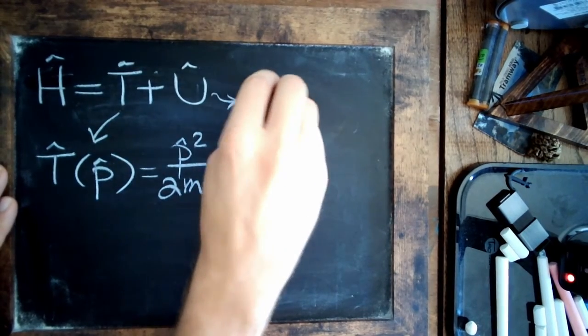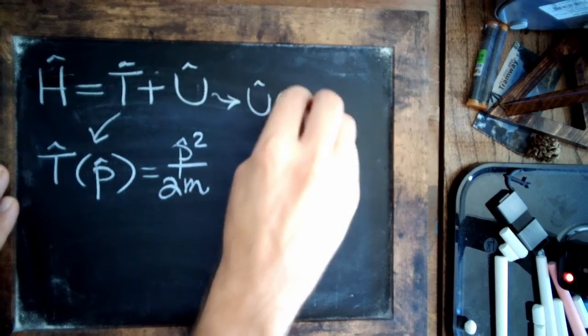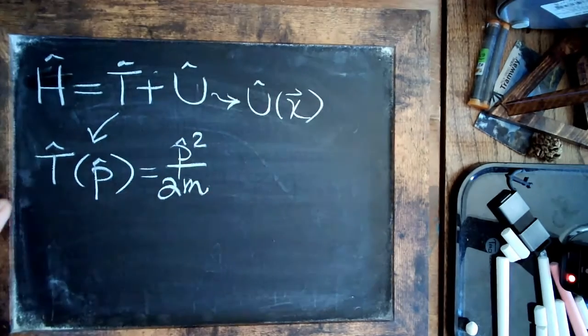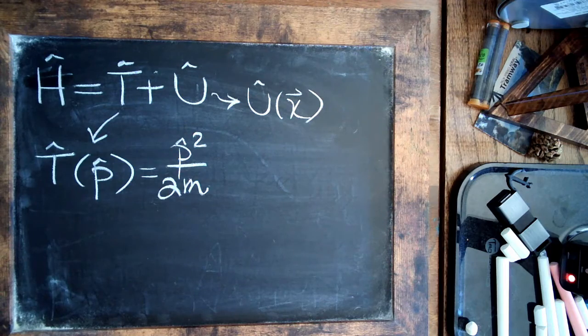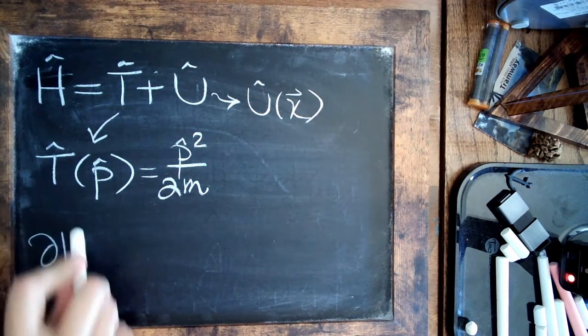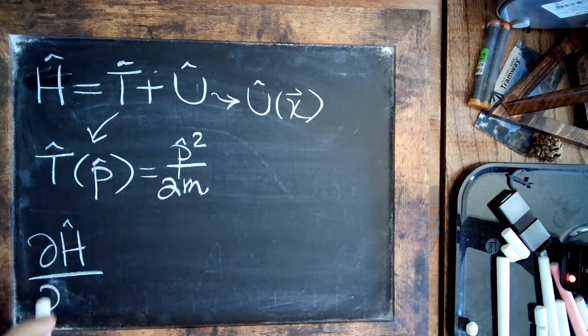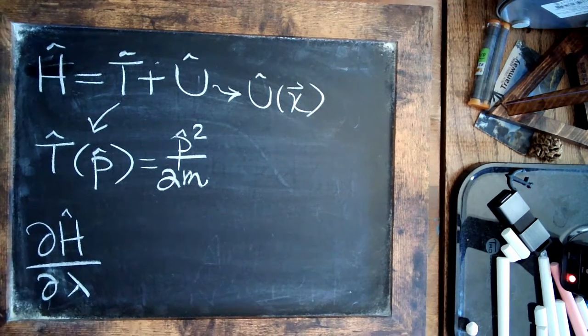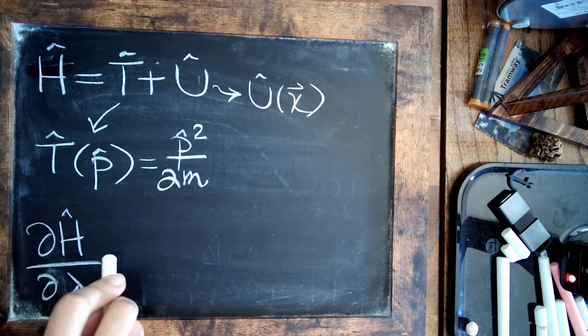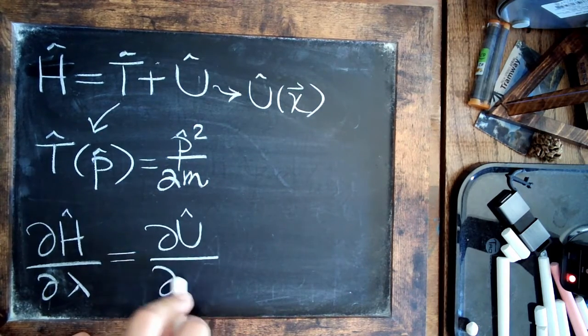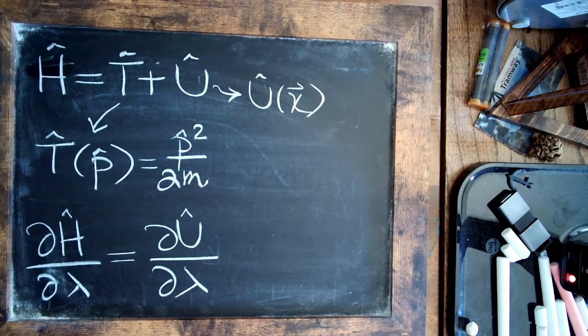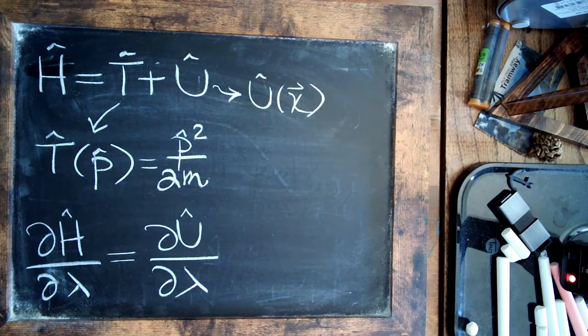is a function of the coordinates. We could say it's the function of the position x or position r, something like that. So if we take the derivative of the total Hamiltonian with respect to a position coordinate lambda, typically that's just going to be equal to the derivative of the potential with respect to lambda. So we have a little bit of a simplification there.